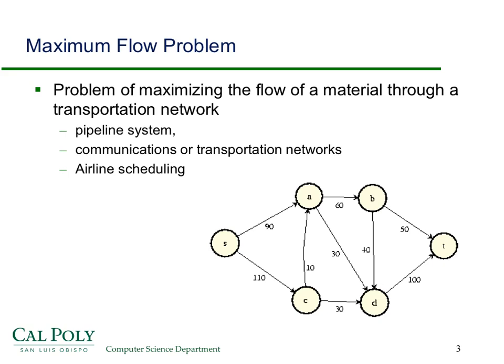The maximum flow problem is the problem of maximizing the flow of material through some transportation networks. What's a transportation network? Here are some examples: a pipeline system to get oil from oil fields to refineries, communications or transportation networks, the interstate highway system for a trucking company, or airline scheduling.